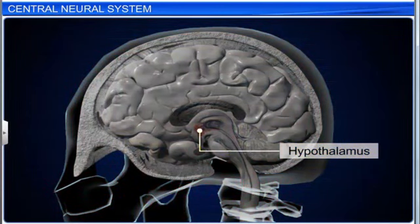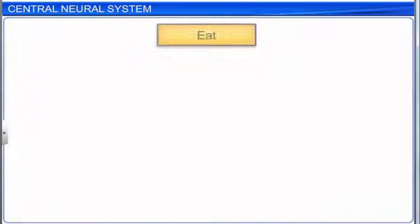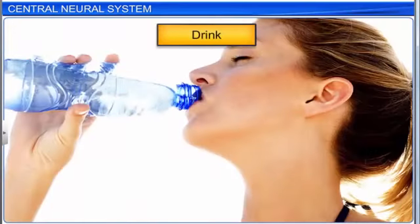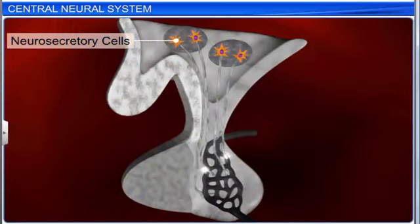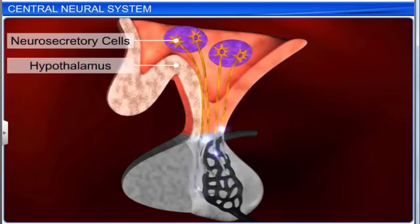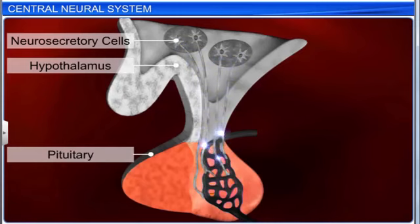The hypothalamus is situated at the base of the thalamus, and it contains the centers that control body temperature, the circadian rhythms, and the urge to eat and drink. Several groups of neurosecretory cells are also present in the hypothalamus, which secrete hormones that control the pituitary, which in turn controls the secretions of other endocrine glands.